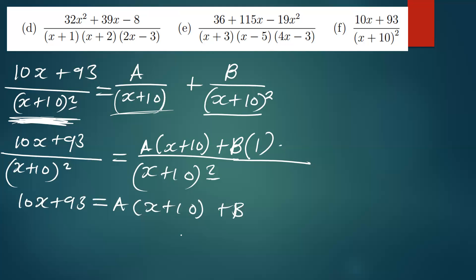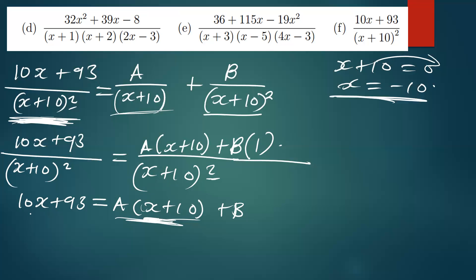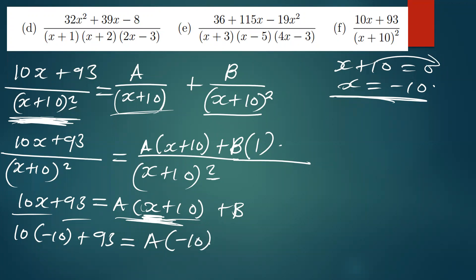Now we can find the values of A and B. To find them, we substitute a number that makes x plus 10 equal to zero. Equating x plus 10 to zero gives x equals negative 10. Substituting into the equation: 10 times negative 10 plus 93 equals A times (negative 10 plus 10) plus B.